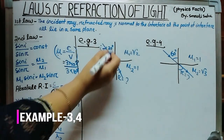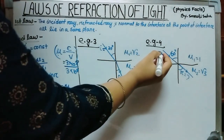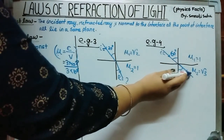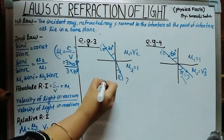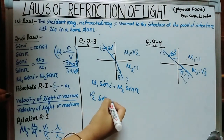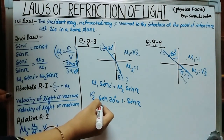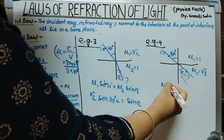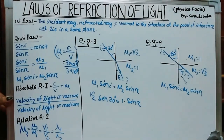Example: angle of incidence = 30°, determine angle of refraction where mu1 = √2 and mu2 = 1. We know that mu1 sin i = mu2 sin r. So √2 × sin 30° = 1 × sin r. In another example, angle of incidence = 60°, first medium has refractive index mu1 and second medium has refractive index √3 — determine angle of refraction.